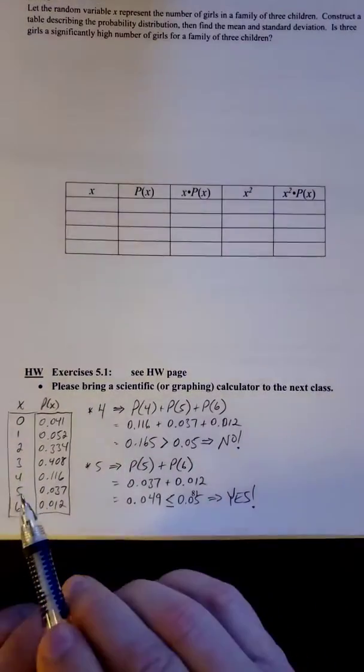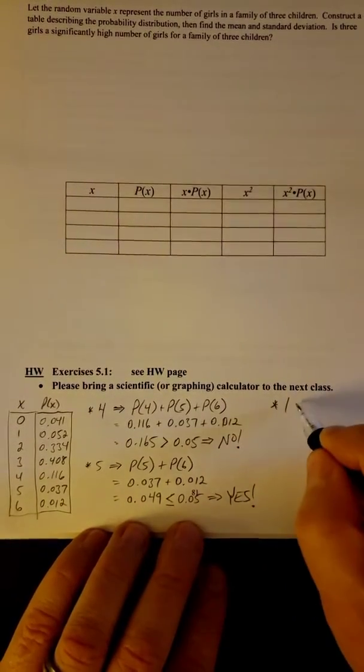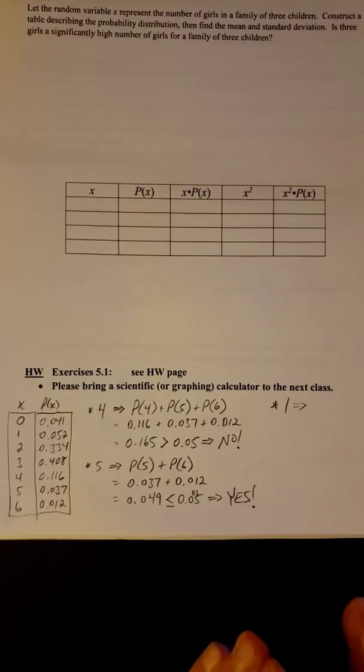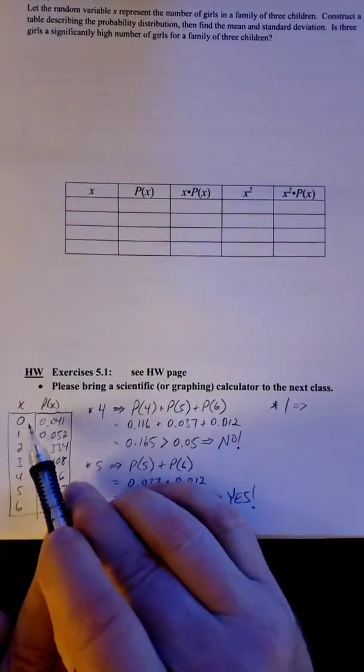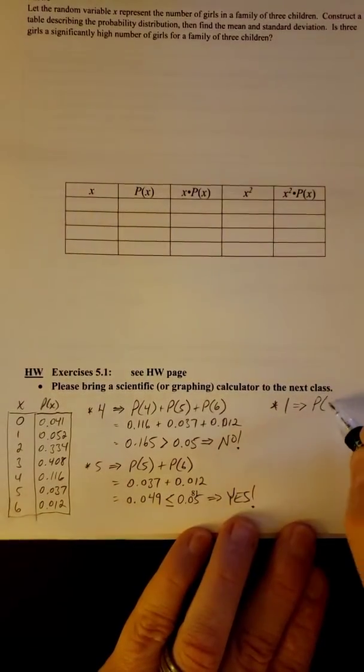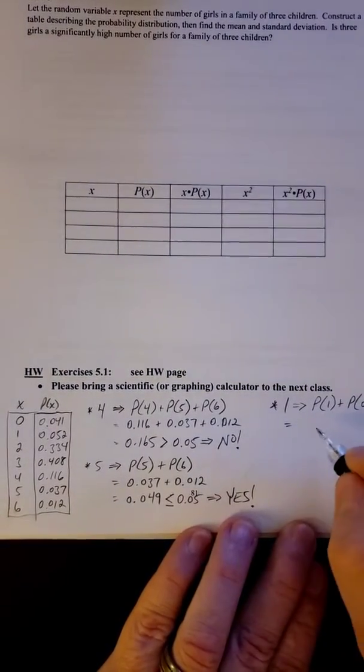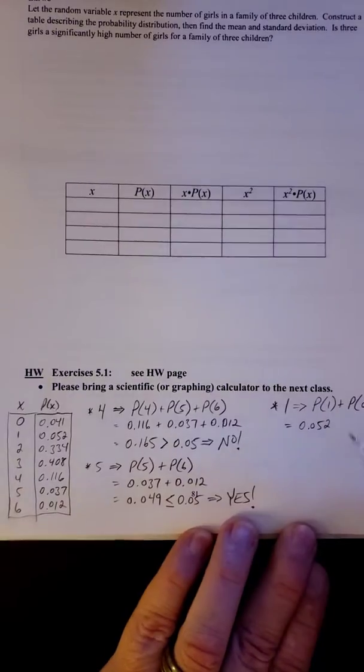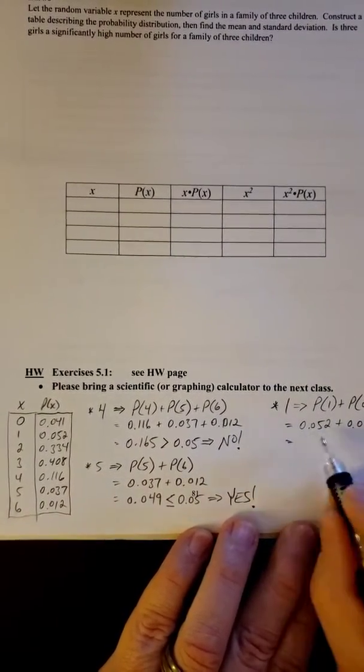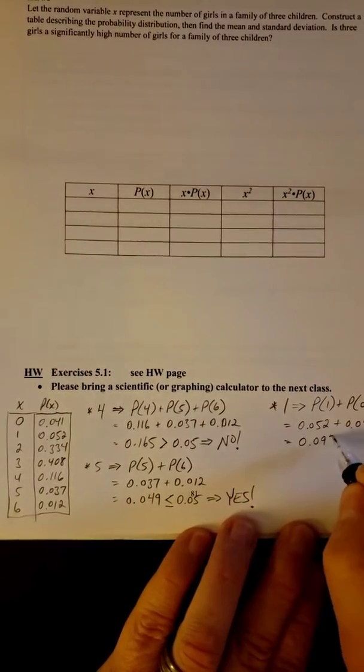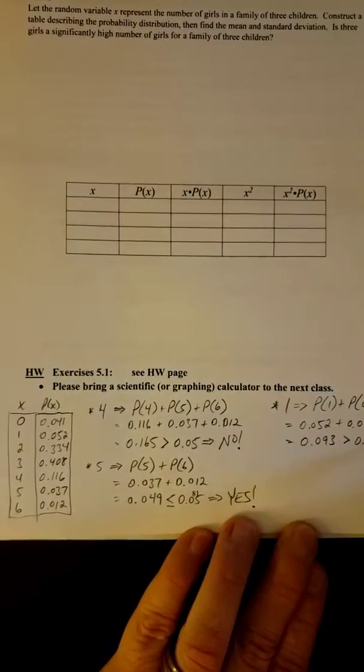Now they also wanted you to look at 1. Is 1 significantly low? Now because they're asking for low, they want that number and below it. So we have to look at 1 and 0 for our probabilities. So if we add those up, what do we get? 0.052 and 0.041, which gives us 0.093. Well, no good. It's greater than 5%. So the answer is no.